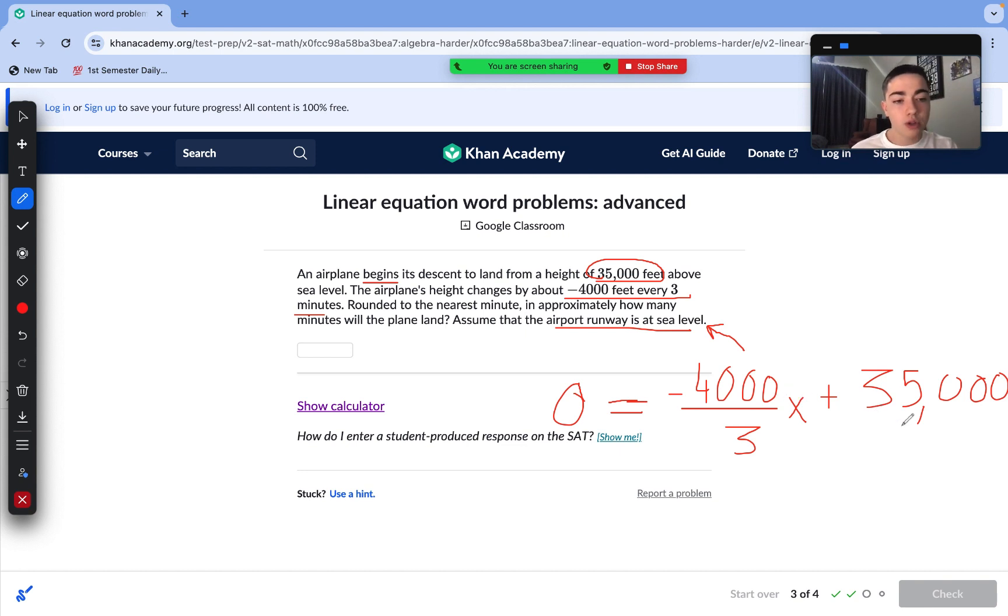First, we're going to have to subtract 35,000 from each side. So, we have negative 35,000 on our left side equals negative 4,000 over 3x. And then, we can get rid of this negative 4,000 over 3 by multiplying each side by negative 3 over 4,000. Our reciprocal.